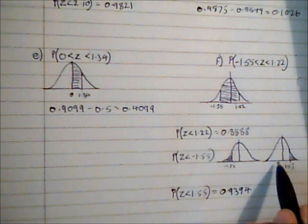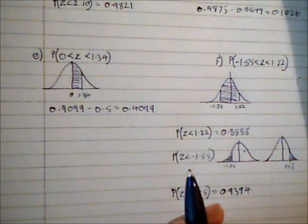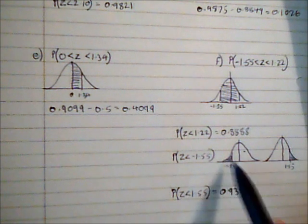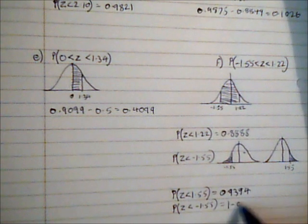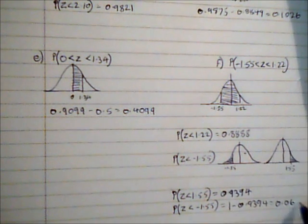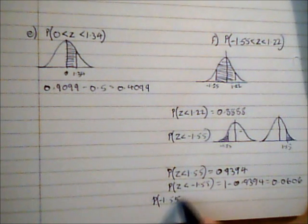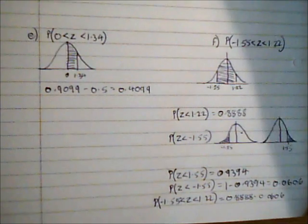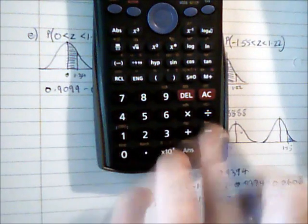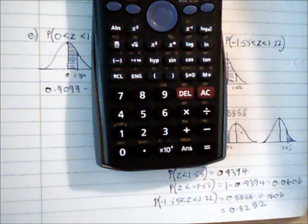Since I'm interested in the tail area, P(Z < -1.55) = 1 − 0.9394 = 0.0606. Now I can complete the calculation: P(-1.55 < Z < 1.22) = 0.8888 − 0.0606 = 0.8282. And that is the final probability.